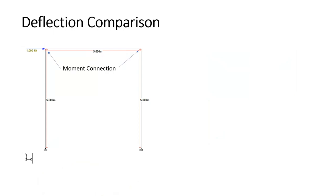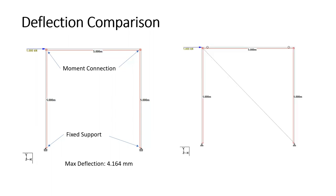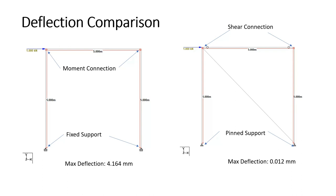Next, along with the fixed support at the bottom, I removed the releases from the beam and provided a moment connection between beam and column. The deflection further reduced to 4.164 mm. Then, with pin supports and shear connections — unable to provide fixity at the bottom or moment connection — I simply added one vertical bracing, and the deflection became very small: just 0.012 mm. So this frame is a stable structure.